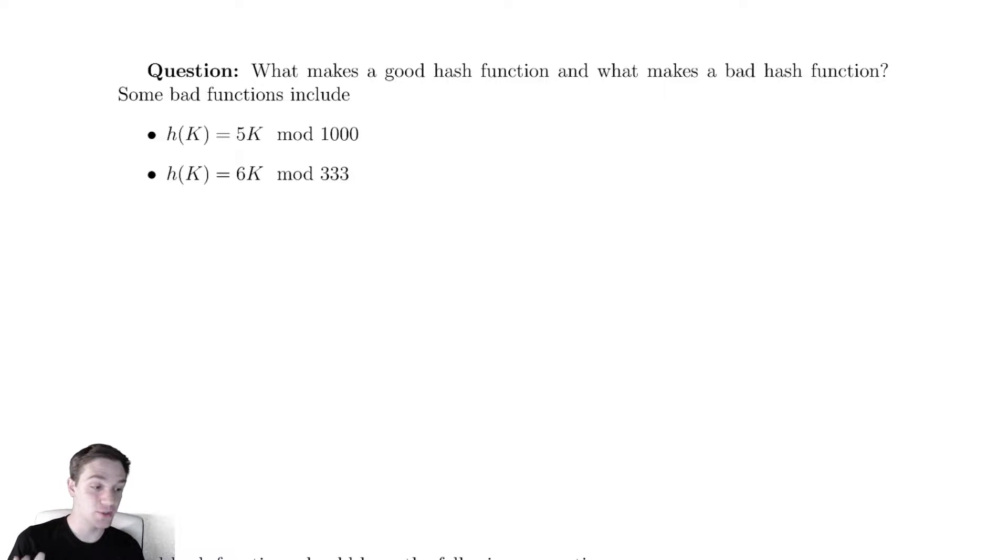With this hash function, the problem is that every single output will either be 0, 5, 10, up until 995. You have only multiples of 5. How could we have known that's true? The problem is that the GCD between 5 and 1000 is 5.